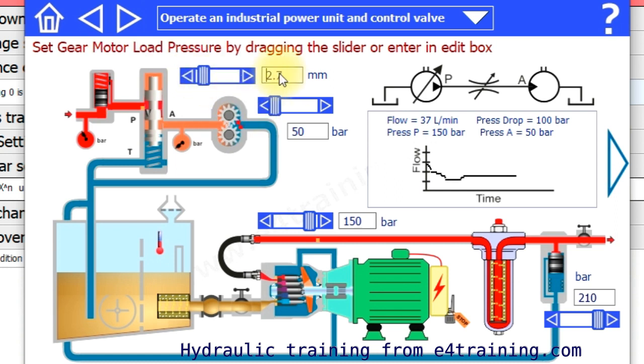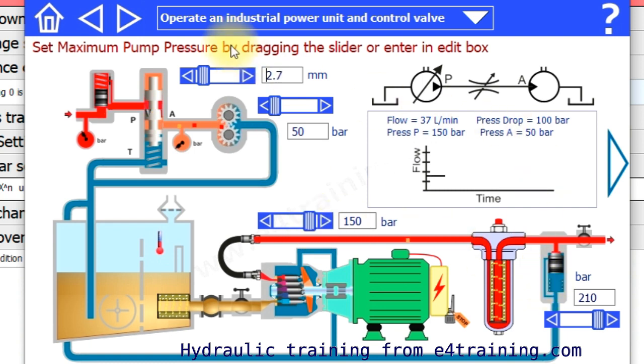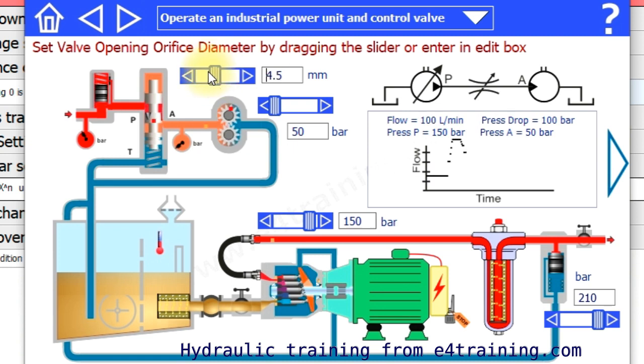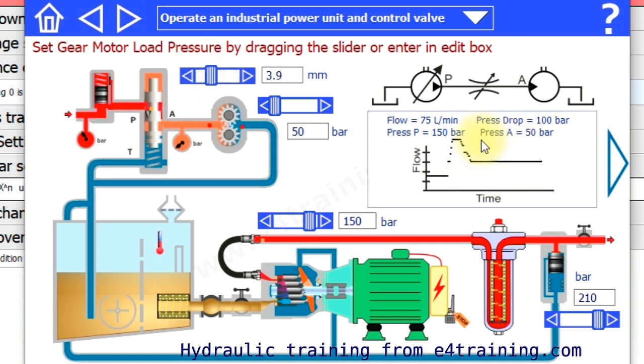Basically you slide the control valves, add your figures in here. You can change the load pressure, you can change the pump settings and the valve settings. You can experiment with the settings and see what happens with the flows and the pressures. You learn about it by experimenting.